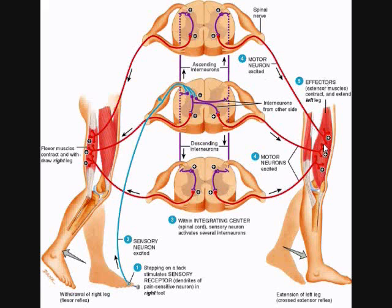The reciprocal innervation for the crossed extensor would be inhibitory signals to the contralateral hamstring muscles — contralateral from the flexor withdrawal, not contralateral from the crossed extensor. So the hamstring muscles on the same side as the contracting quadricep muscles would be inhibited for the reciprocal innervation of the crossed extensor.